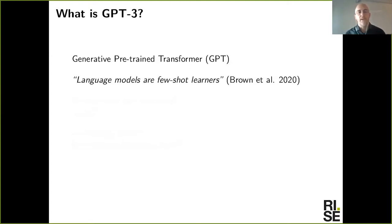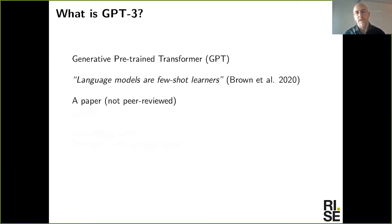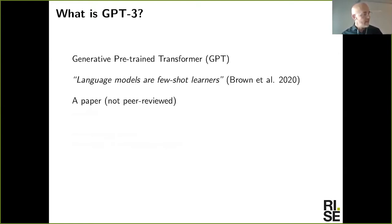What we're actually talking about today is a research paper called 'Language Models are Few-Shot Learners,' published at the beginning of this summer by a group of authors all from OpenAI, which is a private research organization. This paper has not been peer reviewed. Normally, research papers are submitted to a journal or conference and reviewed by other researchers before being published or rejected.